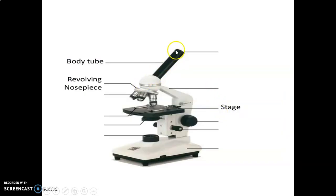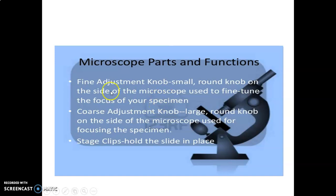This is your body tube connecting the eyepiece to the lenses. This is your revolving nose piece where the objective lenses are, and this is the stage where the slides are kept. Then we also have a fine adjustment knob, which is small and round.